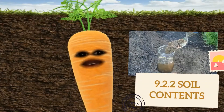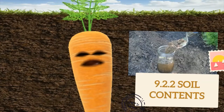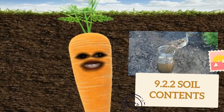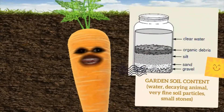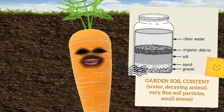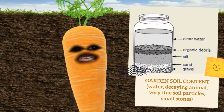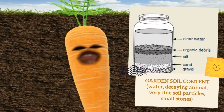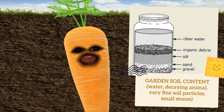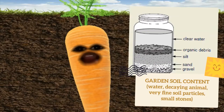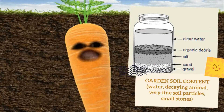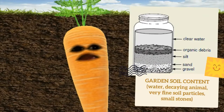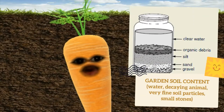Hi students, welcome back. This is Part 2 of Unit 9, Earth — Soil Contents. As we learned in Part 1, there are 3 types of soil: garden soil, clay, and sand. Let's look at the first one. The contents found in garden soil are water, decaying animals, very fine soil particles, and small stones.